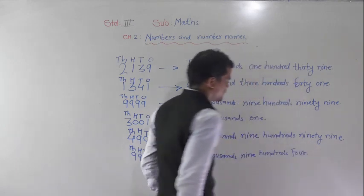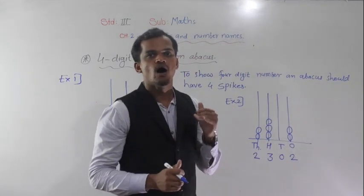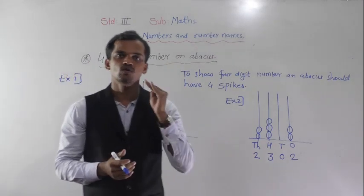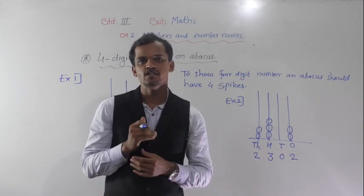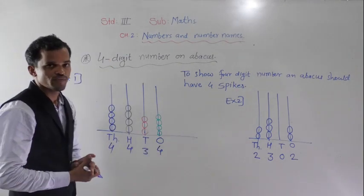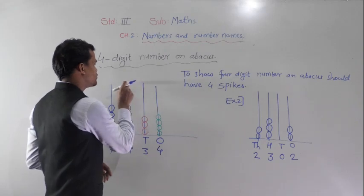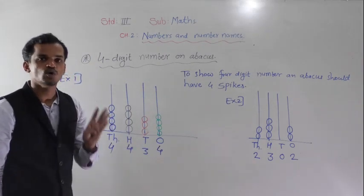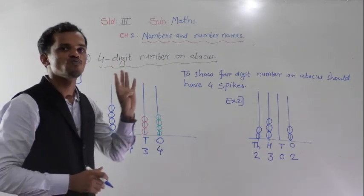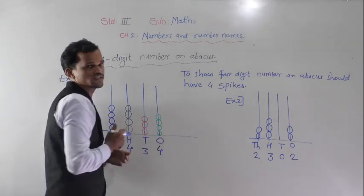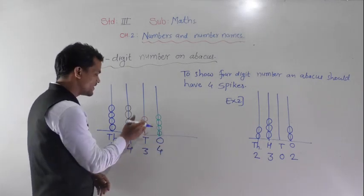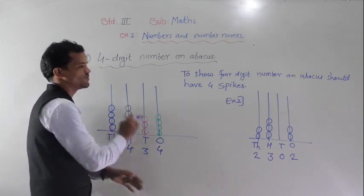Now we will see how to show a 4-digit number on an Abacus. We know that Abacus is a mathematical instrument. Any number we can show by using Abacus. To show a 4-digit number on Abacus, it should have 4 spikes. At the extreme right side it shows the 1s place, then 10s place, then 100s place, then 1000s place.